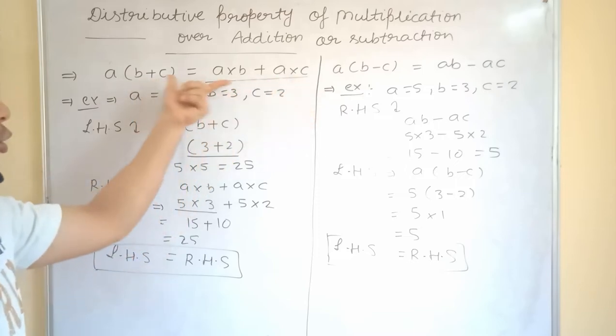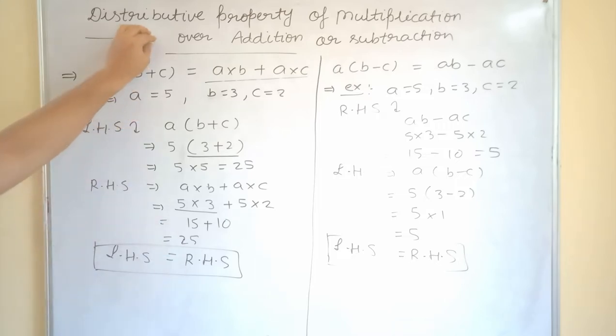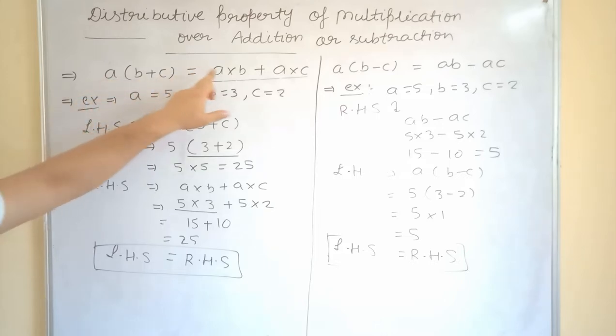And they are correct or not? That we will see by the example. According to this property, A into B plus C, we can write like this. Inside the bracket, two elements are there. And if any number multiplied outside, I can distribute equally. I will distribute A with B, I will distribute A with C. And if there is no sign, it means by default there is into sign.